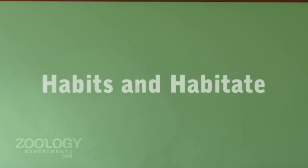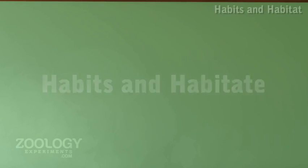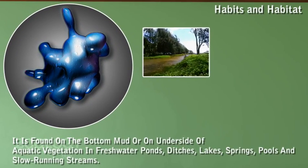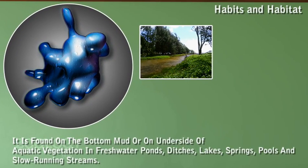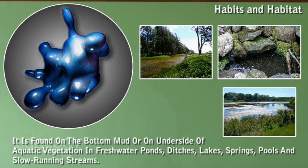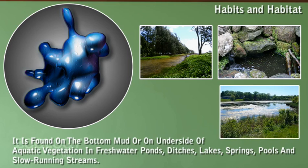Habits and habitat. Amoeba is generally found on the bottom mud or on the bottom of aquatic vegetation, in freshwater ponds, ditches, lakes, springs, pools, and slow-running streams.